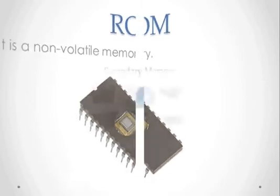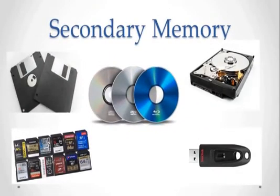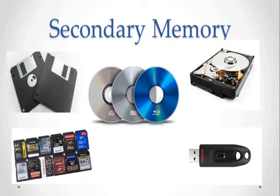Secondary memory consists of magnetic and optical memories. It is known as backup memory. It is a non-volatile memory, meaning data is permanently stored even if power is switched off. It is used for storage of data in a computer. A computer may run without secondary memory.